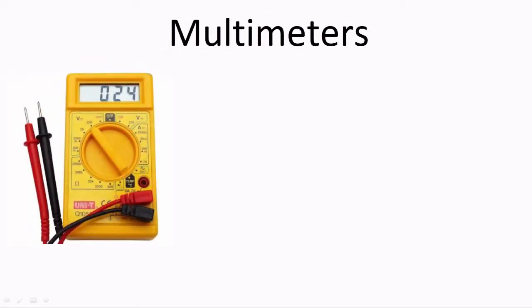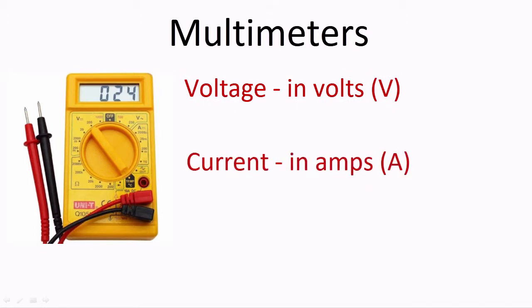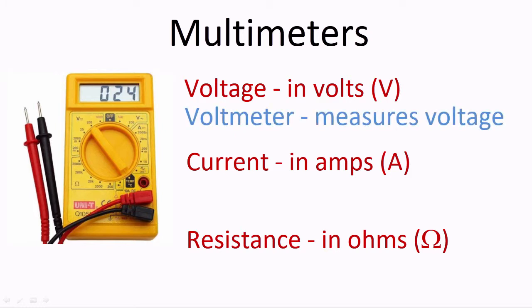A multimeter is a piece of test or measurement equipment that enables you to check the voltage in volts, current in amps, and resistance in ohms in a circuit. It is in fact a combination of three separate test tools: a voltmeter, an ammeter, and an ohmmeter.